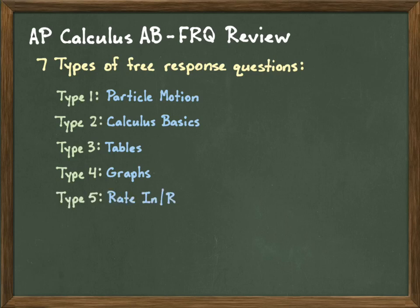Type five is rate in, rate out problems. This involves a lot of applications — for example, it might give you a rate at which water is entering a lake and a rate at which water is leaving the lake, or how many flies are moving into a jar versus moving out of the jar. There's always an application to these.